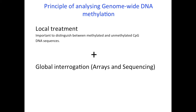Very broadly, this is the principle of analyzing genome-wide DNA methylation data. In the first step we do a local treatment, which is basically to distinguish the methylated and unmethylated CpG sites, because the DNA sequence itself is not changing — all the Cs are still there — but some CpGs have a methylation mark and some don't. This local treatment distinguishes these two so that later on when we analyze them we can separate and interpret them. Once you do the local treatment, the next step is the global integration or global analysis to get the information out.